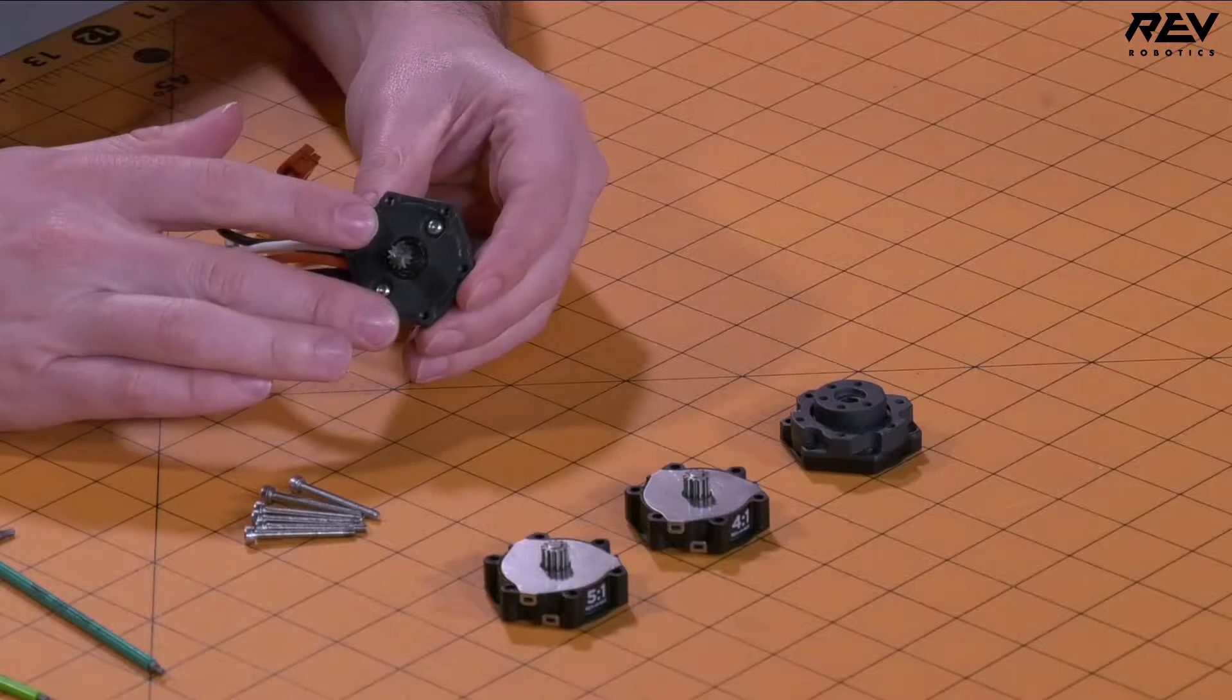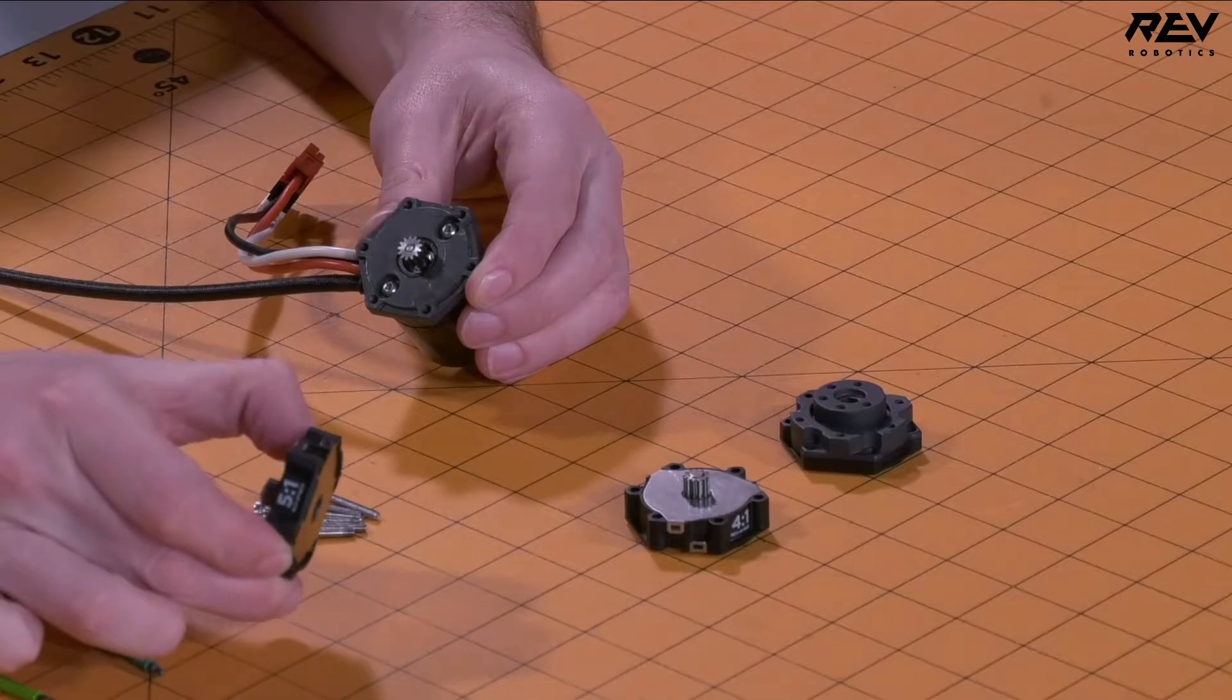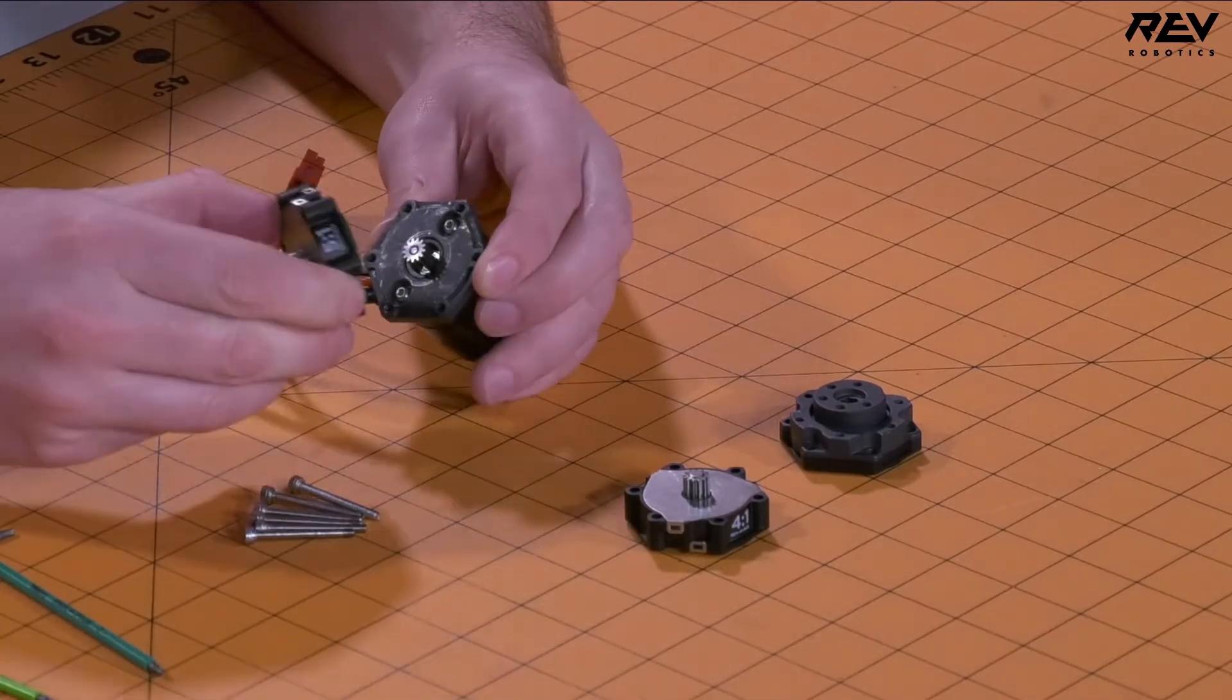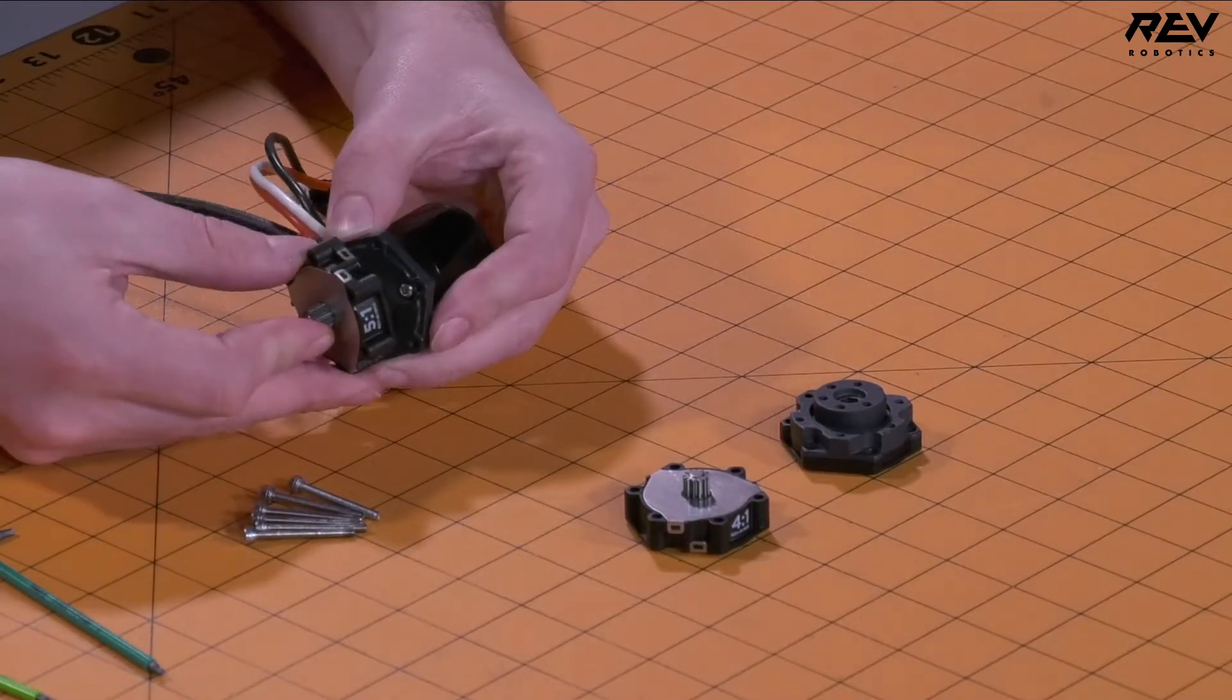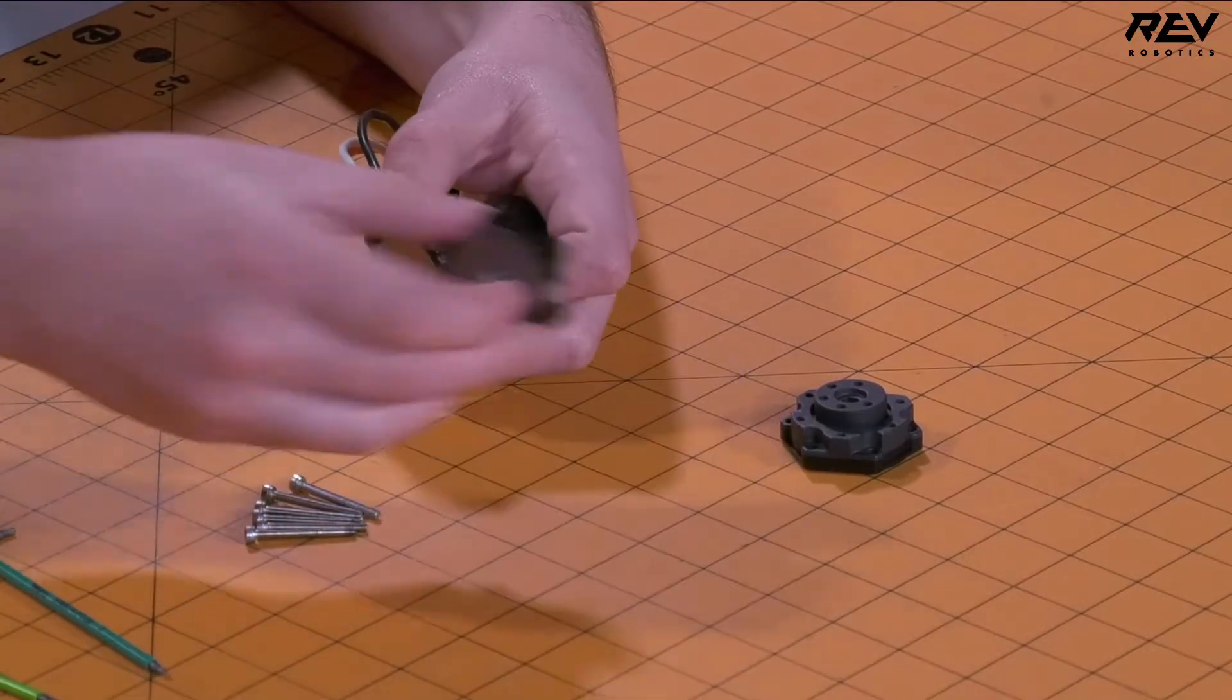Once our mounting plate is on, we can start putting on our individual cartridges. First start with the 5 to 1 cartridge, our highest gear reduction, and have that as close to the motor as we can. We'll take these at a little bit of an angle here to feed this on, and you just slide that on there.